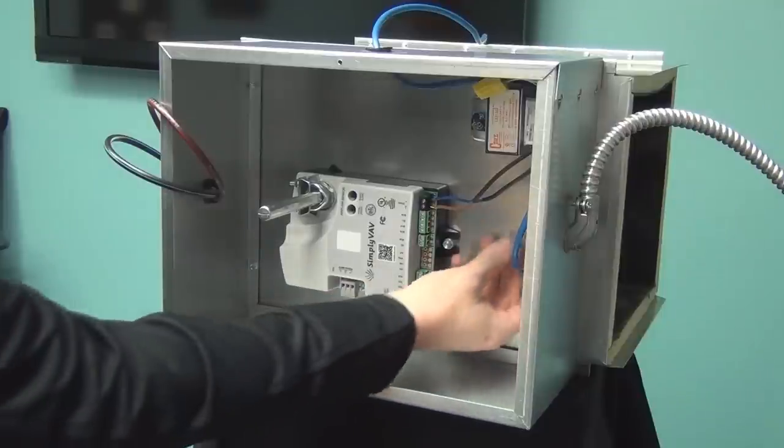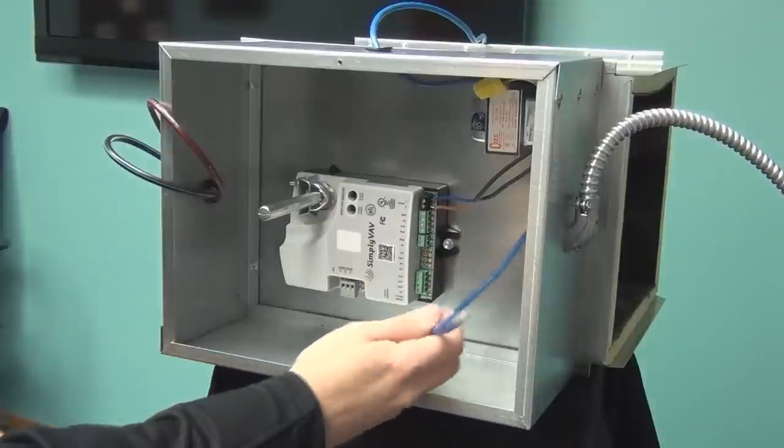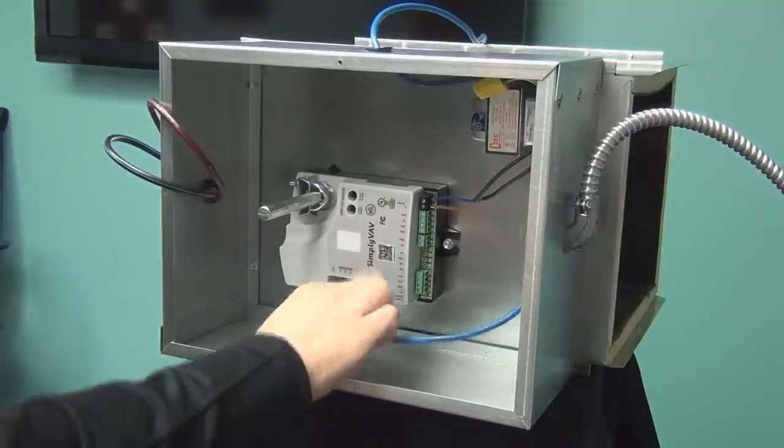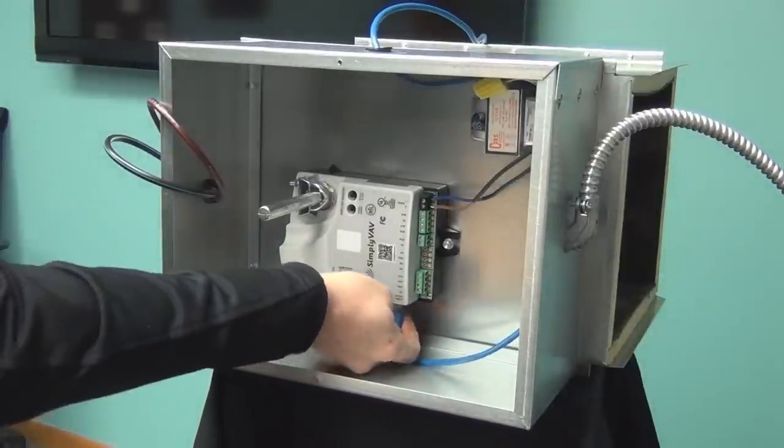The next step is to connect an Ethernet patch cable to the dedicated sensor port. I'll install and connect the digital room sensor later in this video.